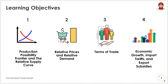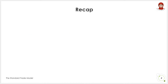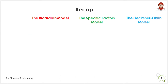Before we begin with the first learning objective, we will have a quick recap on what we have learned previously — that is, the Ricardian model, the Specific Factors model and the Heckscher-Ohlin model. Each of these models makes different assumptions about the determinants of production possibility. The standard trade model, which we will discuss today, has its assumptions based on a mixture of these 3 models. We will now see the differences of these 3 models in terms of factors of production, strength and limitation.